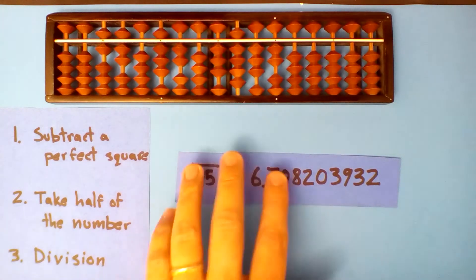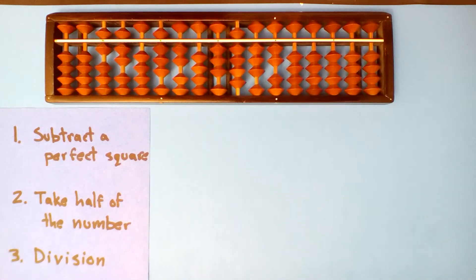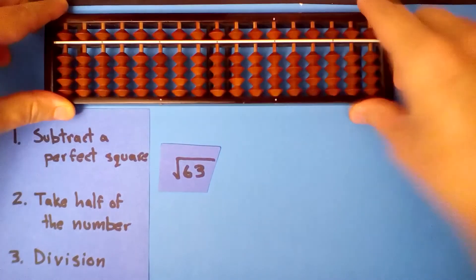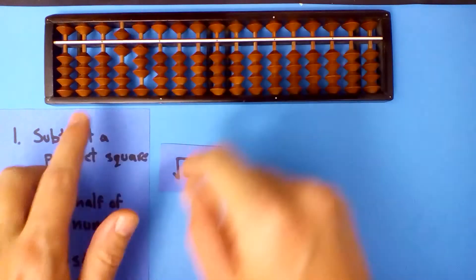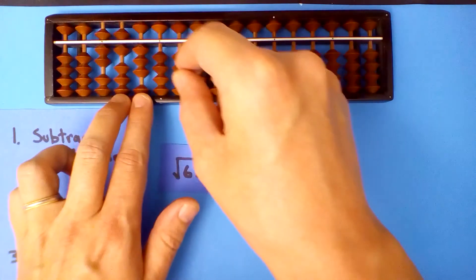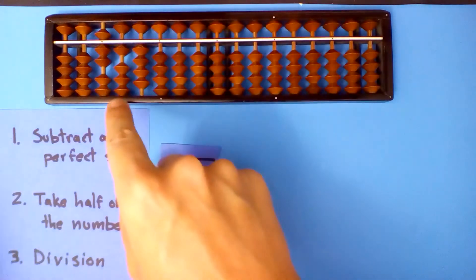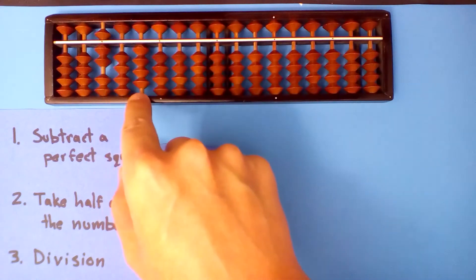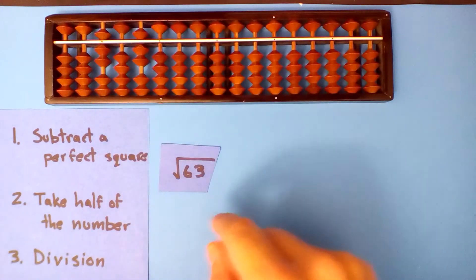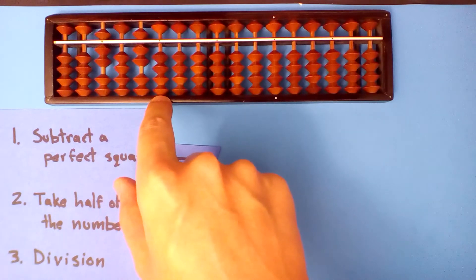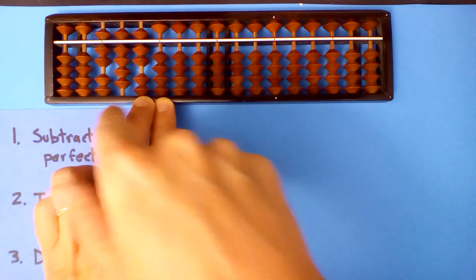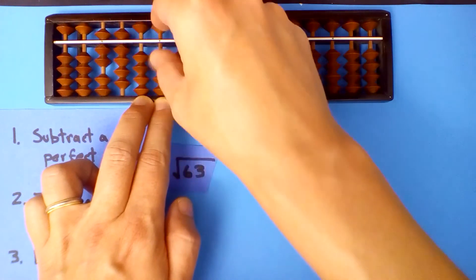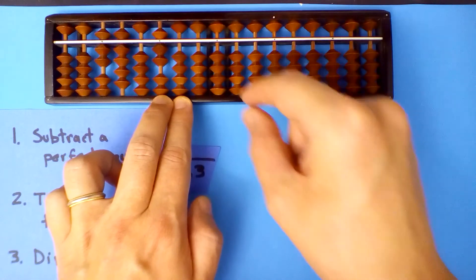An example of the square root of 63. Subtract a perfect square — 7. 7 squared is 49. Take half of what's left: half of 1, half of 14. 7 goes into 70 ten times, but 9 will be enough, because we're really dividing by 7.9. 9 times 7 is 63, 9 times itself — but only half.